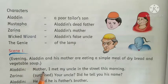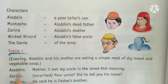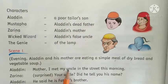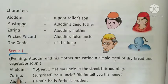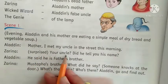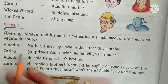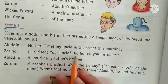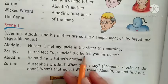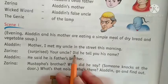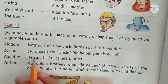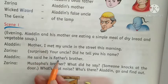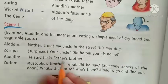Aladdin says: 'Mother, I met my uncle in the street this morning.' Aladdin ne kya kaha ki maa, meh street mein aaj subah mehre uncle se mila tha. Zarina says (surprised): 'Your uncle? Did he tell you his name?' Zarina ne kya kaha ki woh surprised ho gayi — chakit ho gayi. Usne kaha: 'Tumhari uncle? Did he tell you his name?' Aladdin says: 'He said he is father's brother.' Aladdin ne kaha ki unhone kaha tha ki woh mere father ke bhai hai.